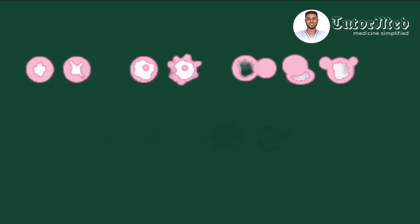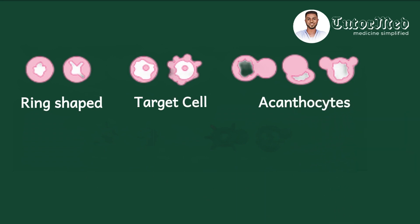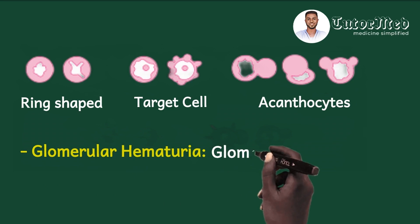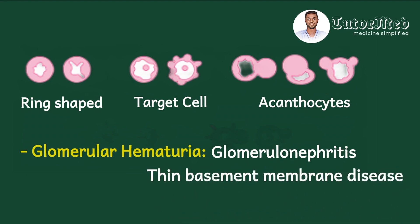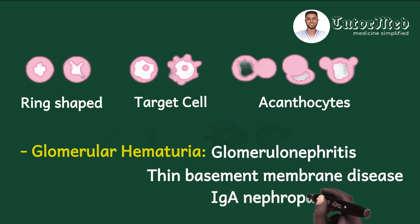This diagram shows a few of the dysmorphic red blood cells that may be seen under microscopy. Some red blood cells are ring-shaped instead of biconcave, some appear as target cells, and others are acanthocytes — red blood cells with blebs. Once dysmorphic red blood cells are present, they represent glomerular hematuria. Causes include glomerulonephritis, thin basement membrane disease, and IgA nephropathy.